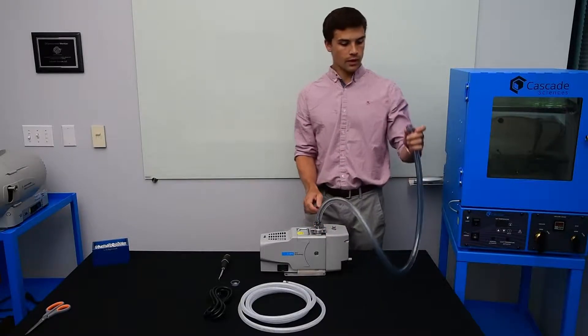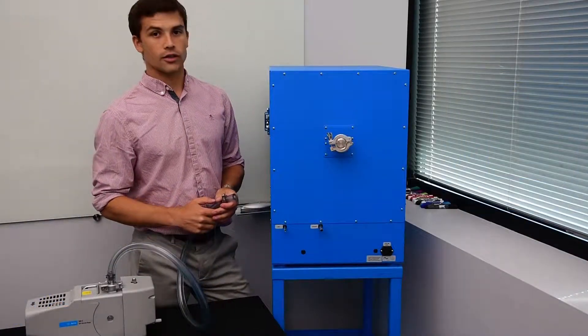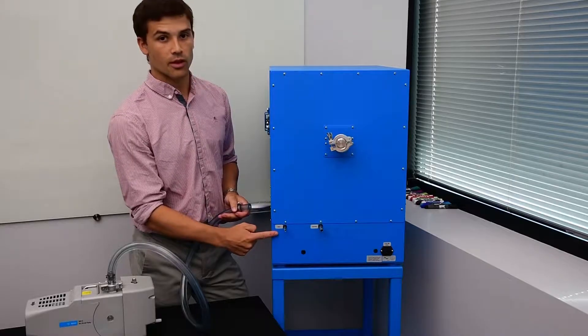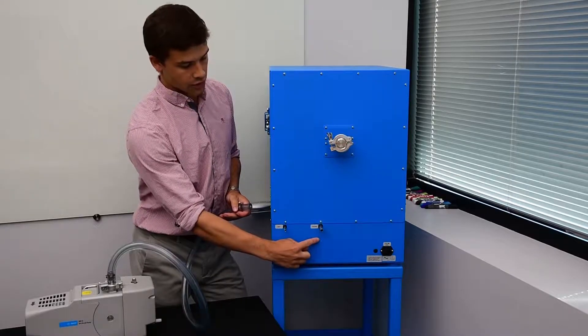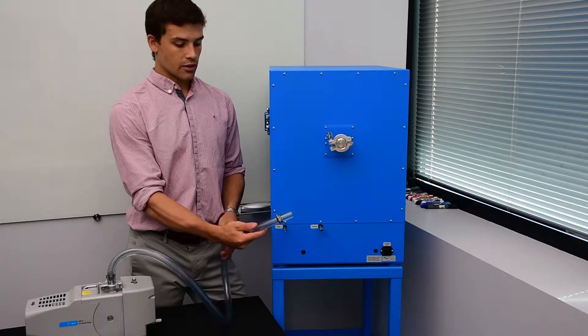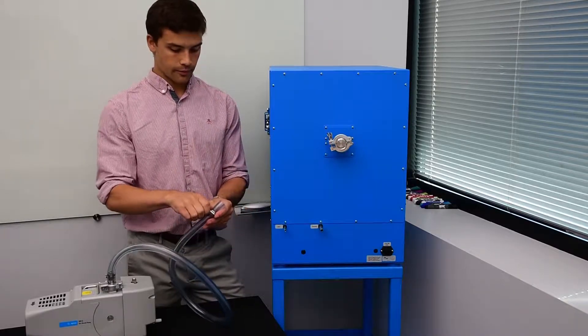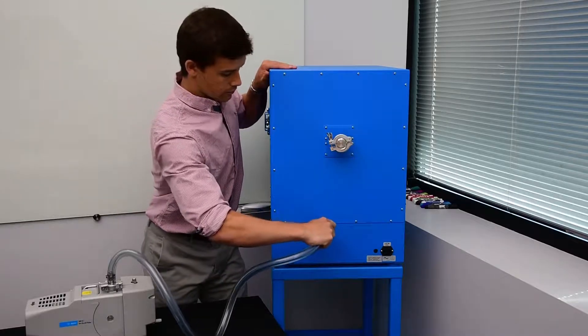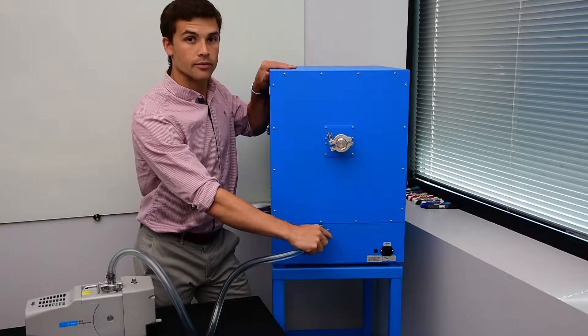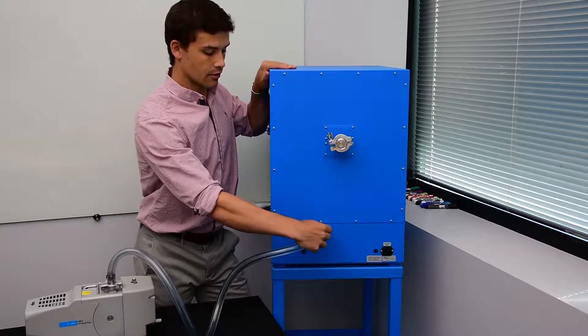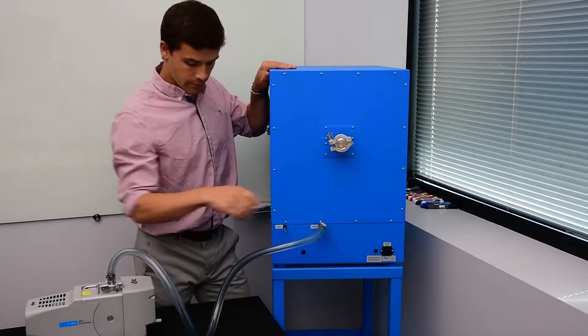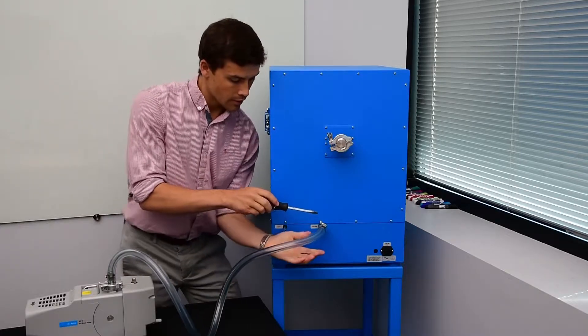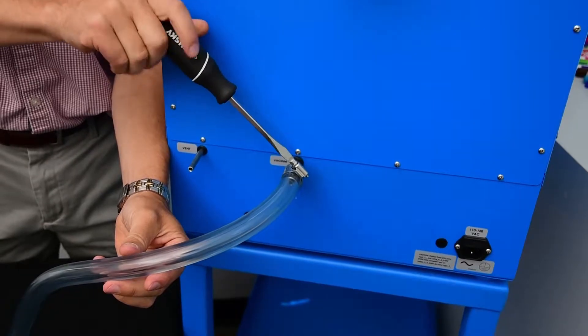Make sure that's tight. There are two vacuum barbs on the back of your vacuum oven. The smaller one is a vent and the larger one is 3 1/8 inch and that will attach to the vacuum hose. Now we'll slide the hose over the barb so there's enough for a good seal with the clamp. Take the screwdriver and tighten the clamp up.